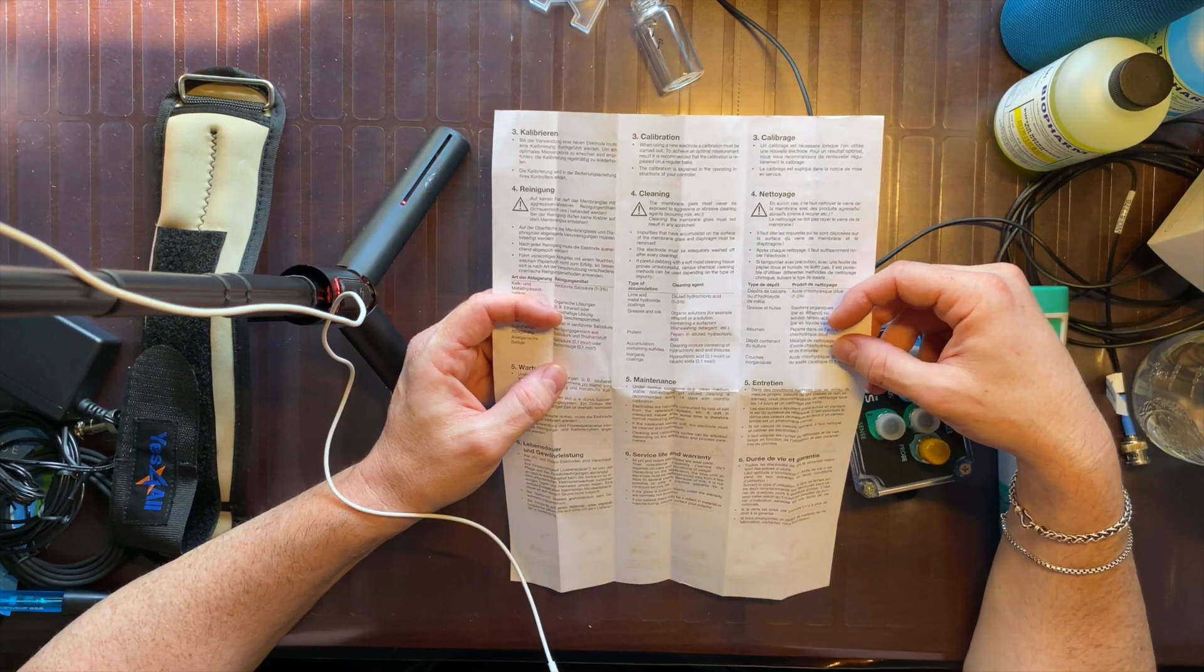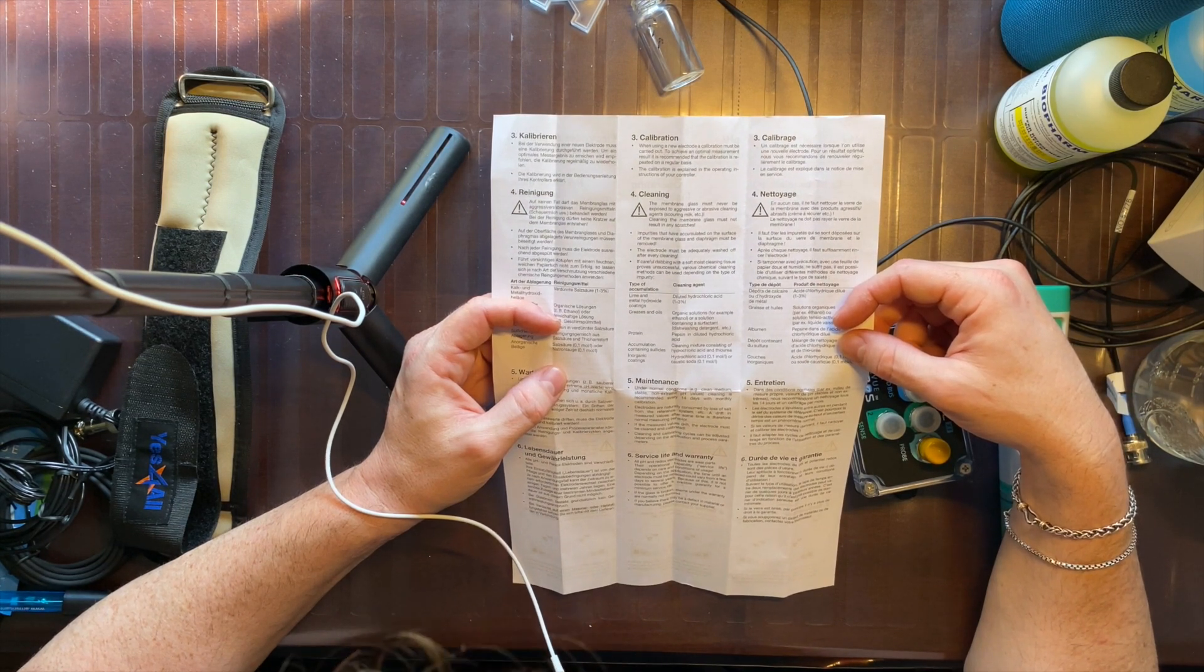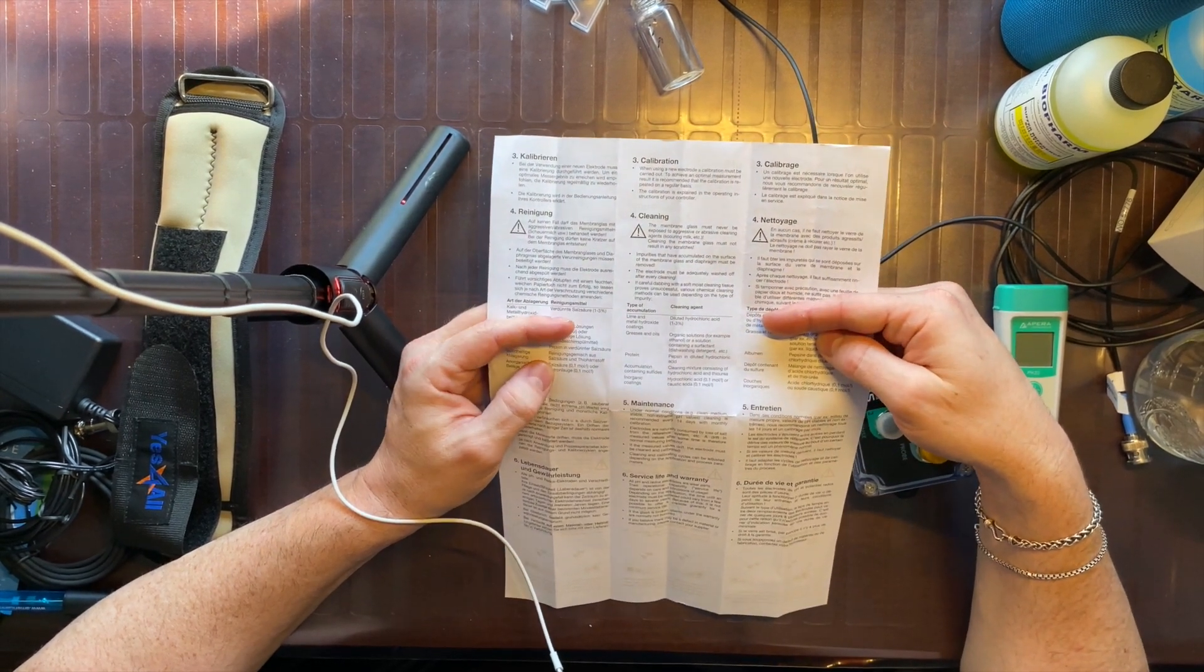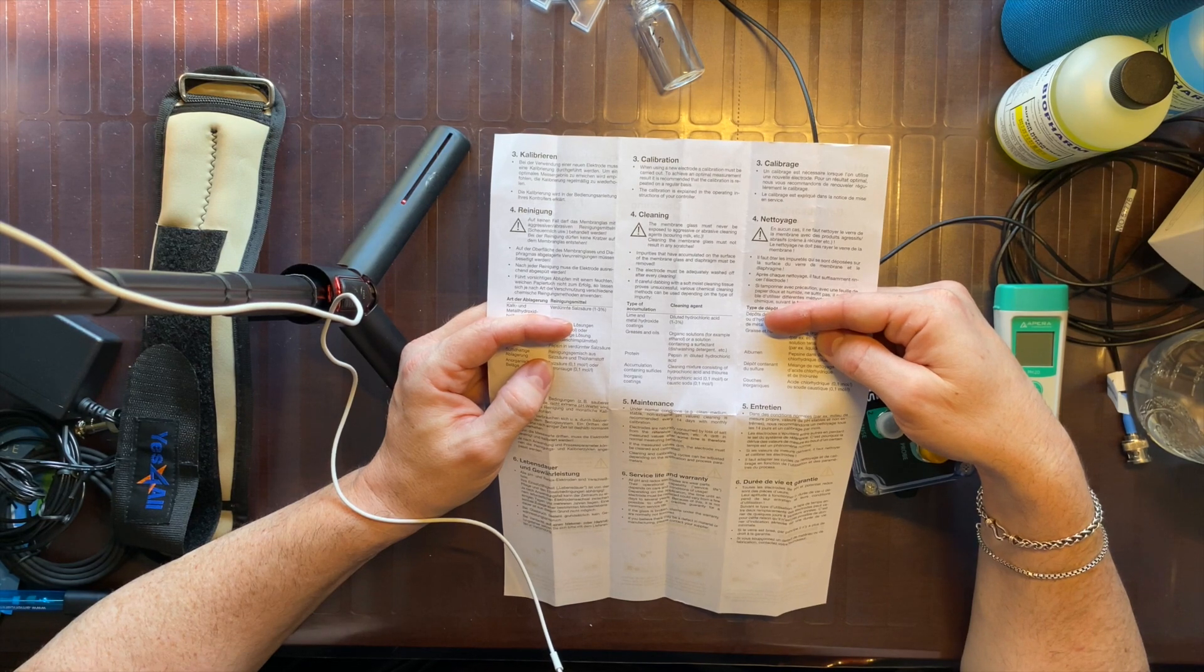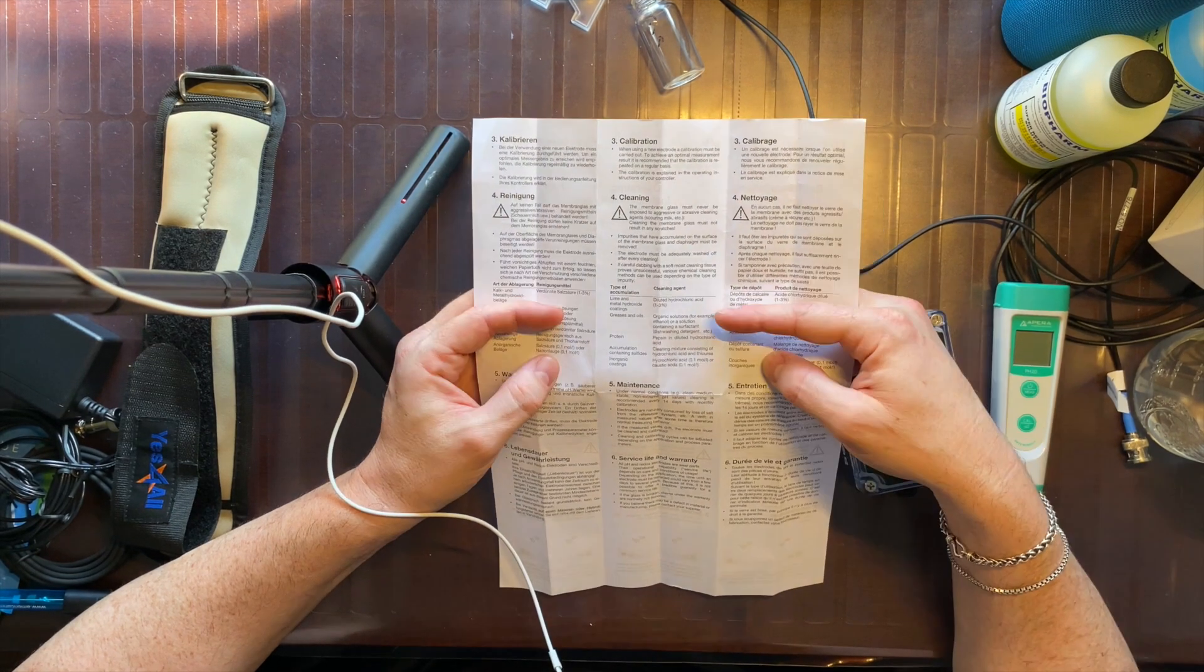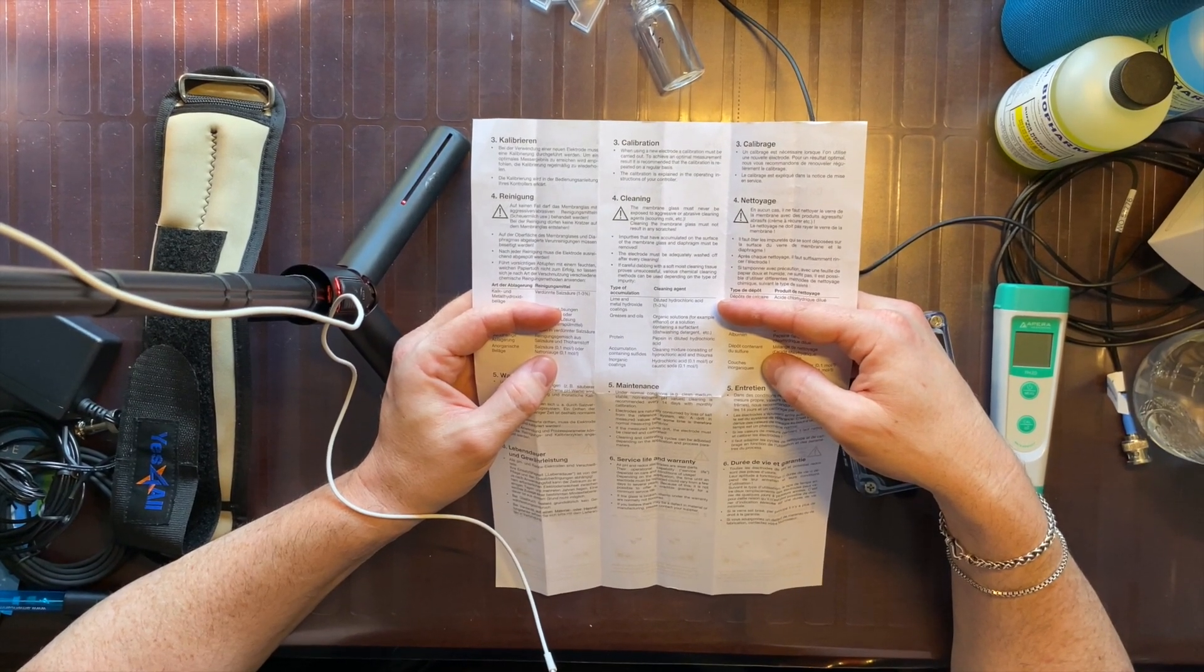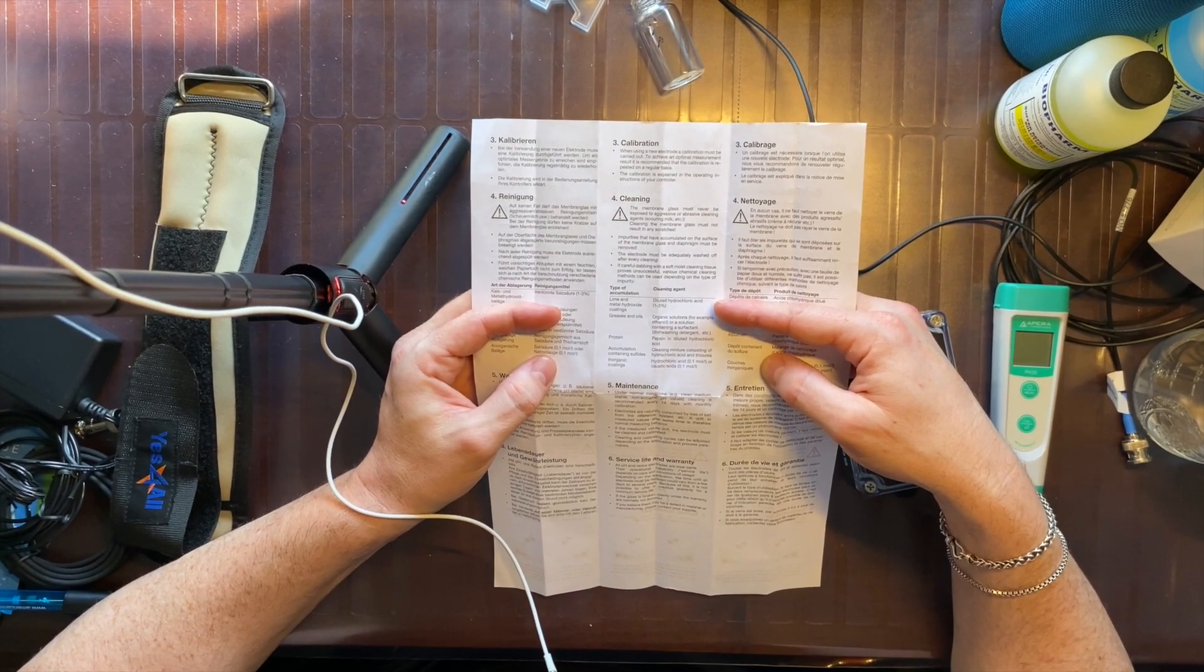Here are the instructions about how to clean the probe, and it does recommend doing so every 14 days or so. They're recommending the use of hydrochloric acid for lime and metal hydroxide coatings, and for greases and oils just using a detergent. So I ordered some hydrochloric acid on Amazon. It was about $17 at 6%, and I'm going to dilute it by 50%.